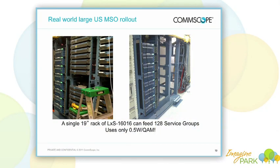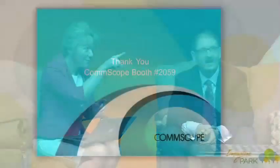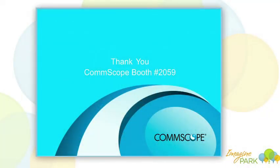A last picture gives you a sense of density and scale. Essentially we've got a 7-foot rack with 8 of those products racked out — that's 128 service groups, each one being 160 QAMs. So that's about 20,000 QAMs, and that would take half a watt per QAM. We'd love to talk to people more about it — we've got a booth very close by, booth number 2059. We've got the product racked up and working, and we'd love to answer any of your questions.